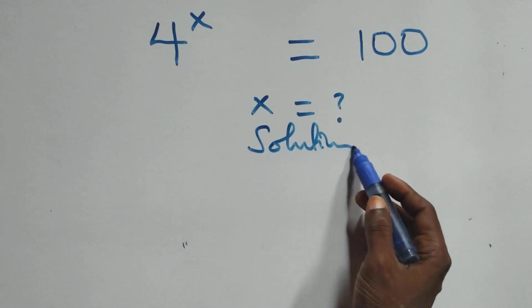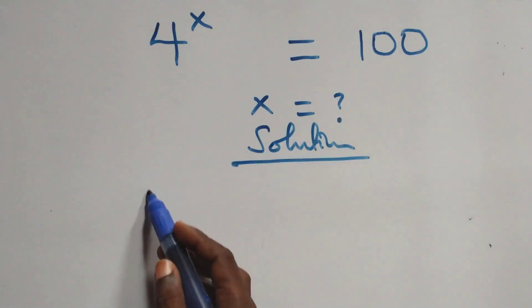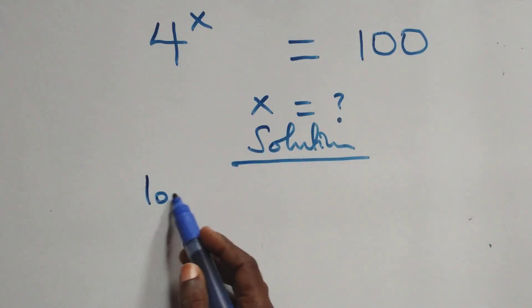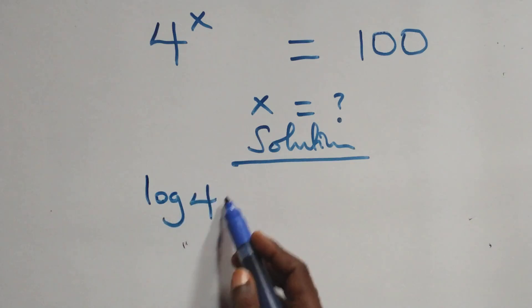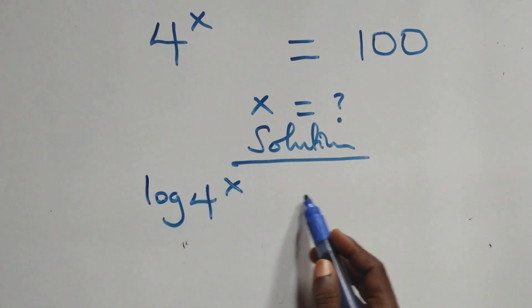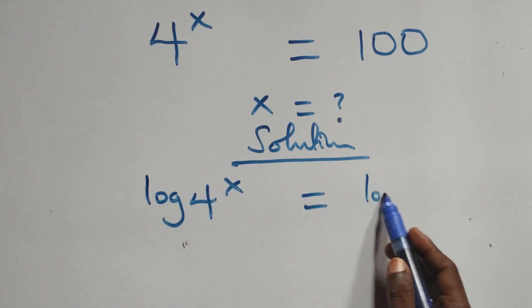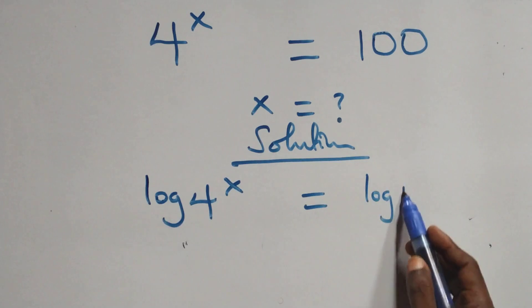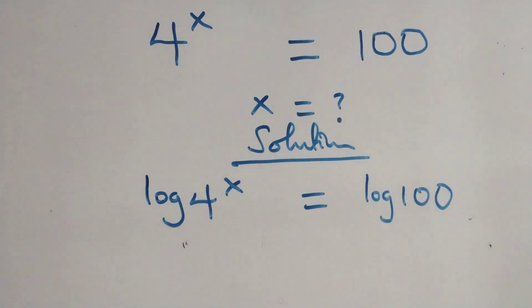From what we have here, we take the log on both sides. This becomes: log 4 to the power x equals log 100 on this side.